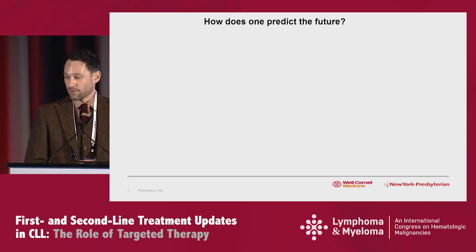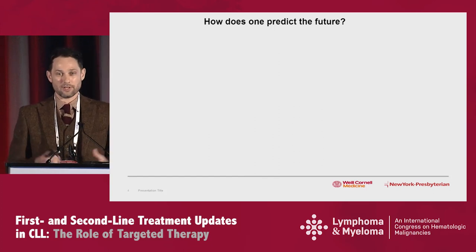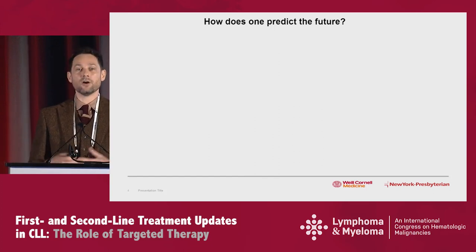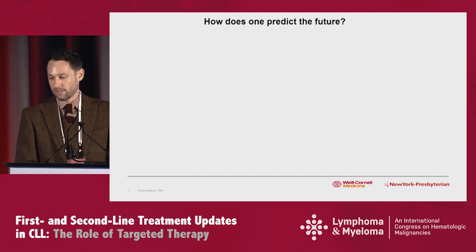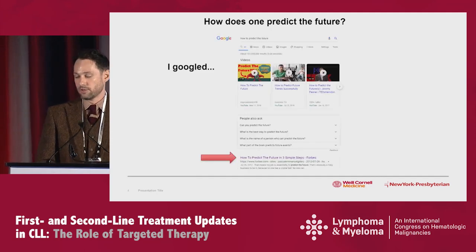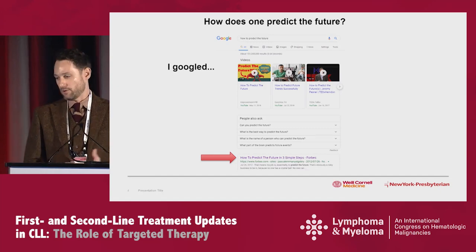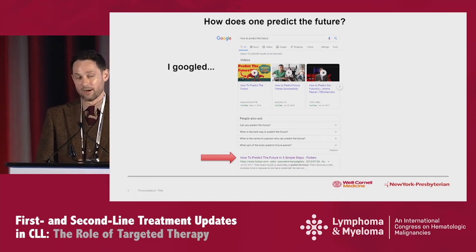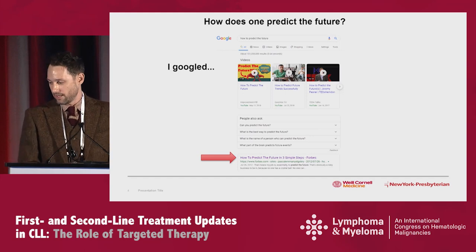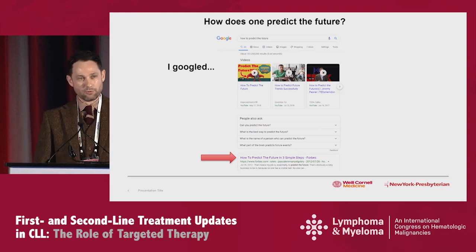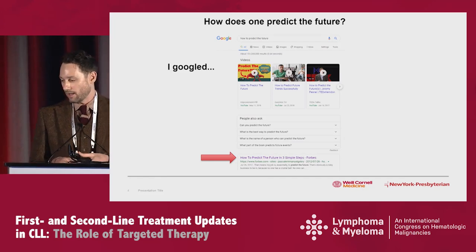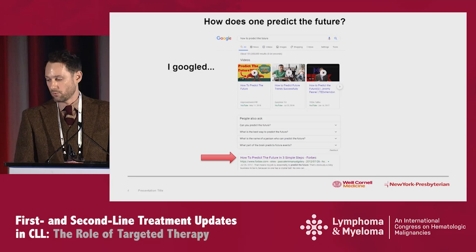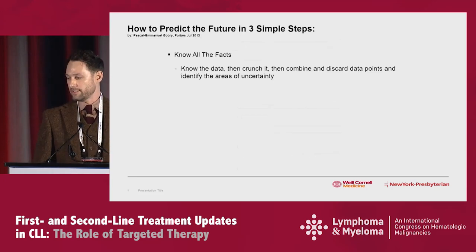This is a question about the future, obviously — how do we know the answer if we don't really have long-term perspective data on whether this is going to be the answer to our problems with CLL. So what does one do when they want to learn how to predict the future? You Google it. I Googled how to predict the future and found a nice article from 2012 — I wish I'd read it then, because I probably would be on an island somewhere. So these are the three simple steps from this Forbes article.